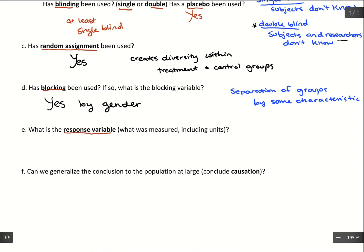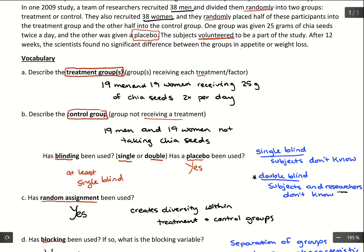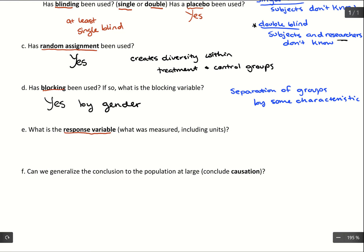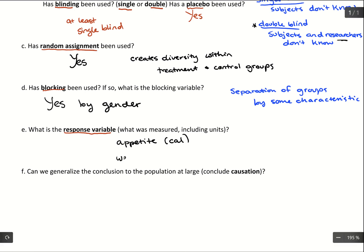The response variable is what we want to measure. In this study, they were looking at the effect on appetite or weight loss. For appetite, they may have been tracking daily calorie intake. For weight loss, they were probably tracking weight in pounds to see how weight changed throughout the study.